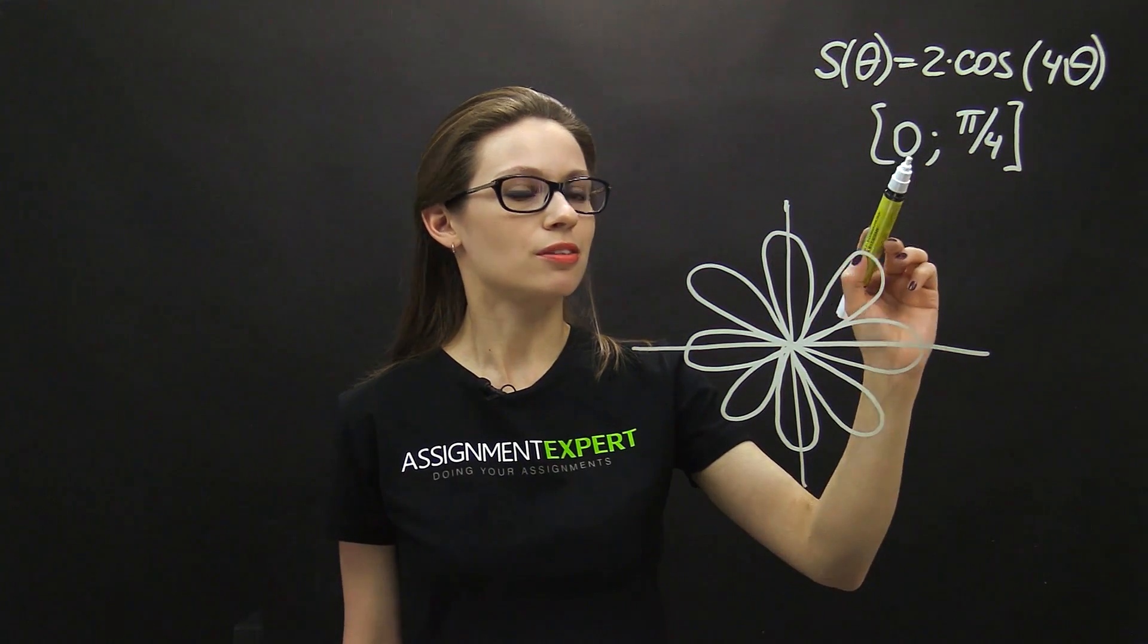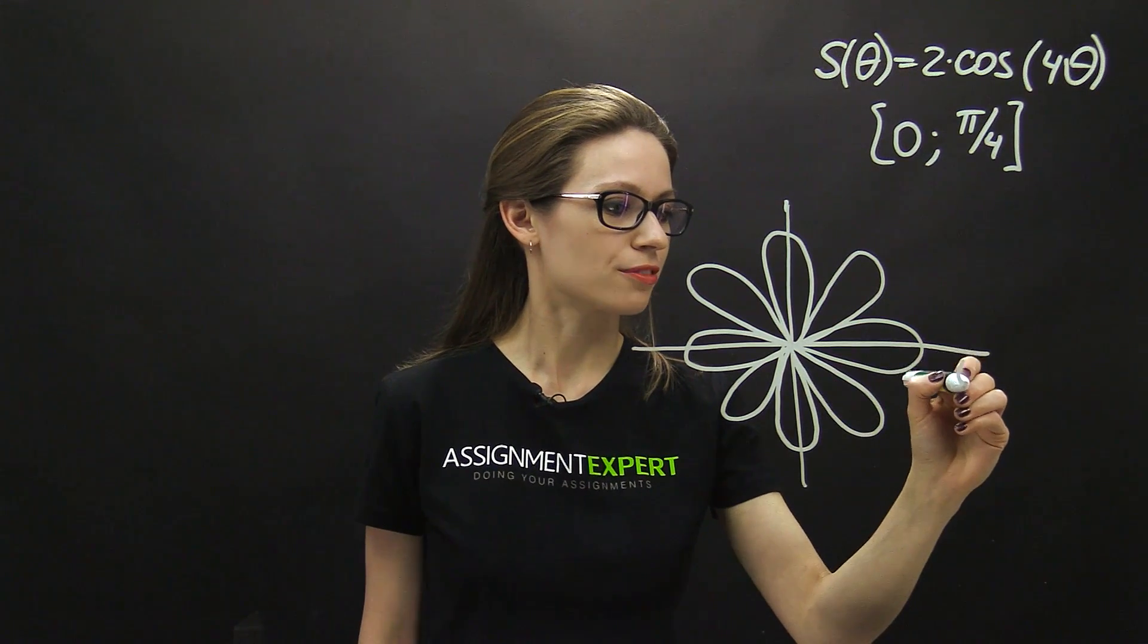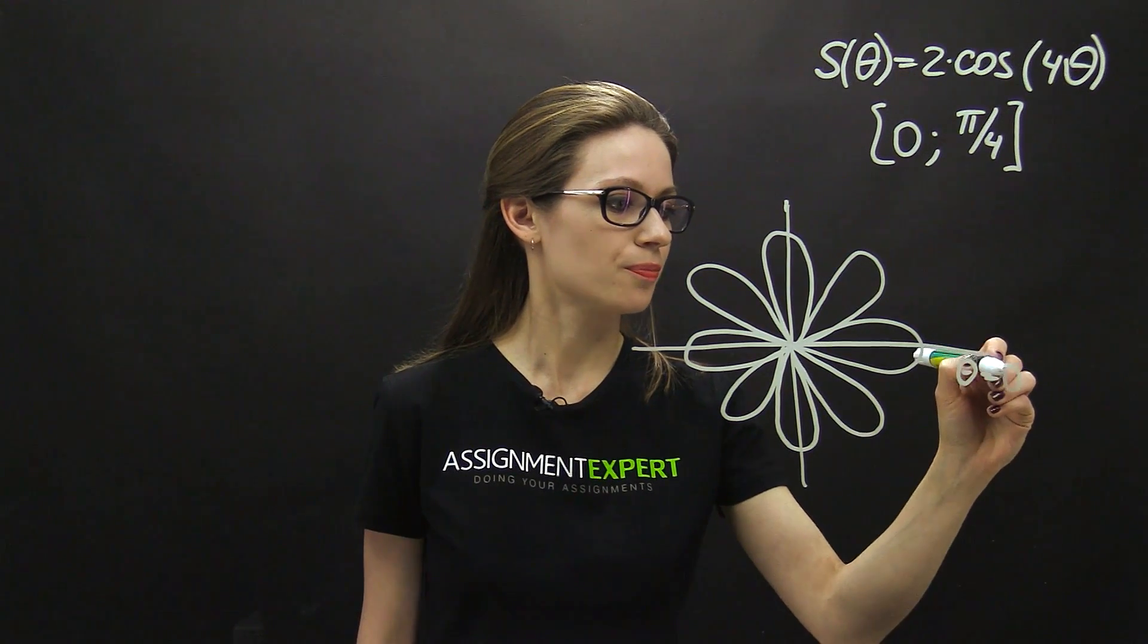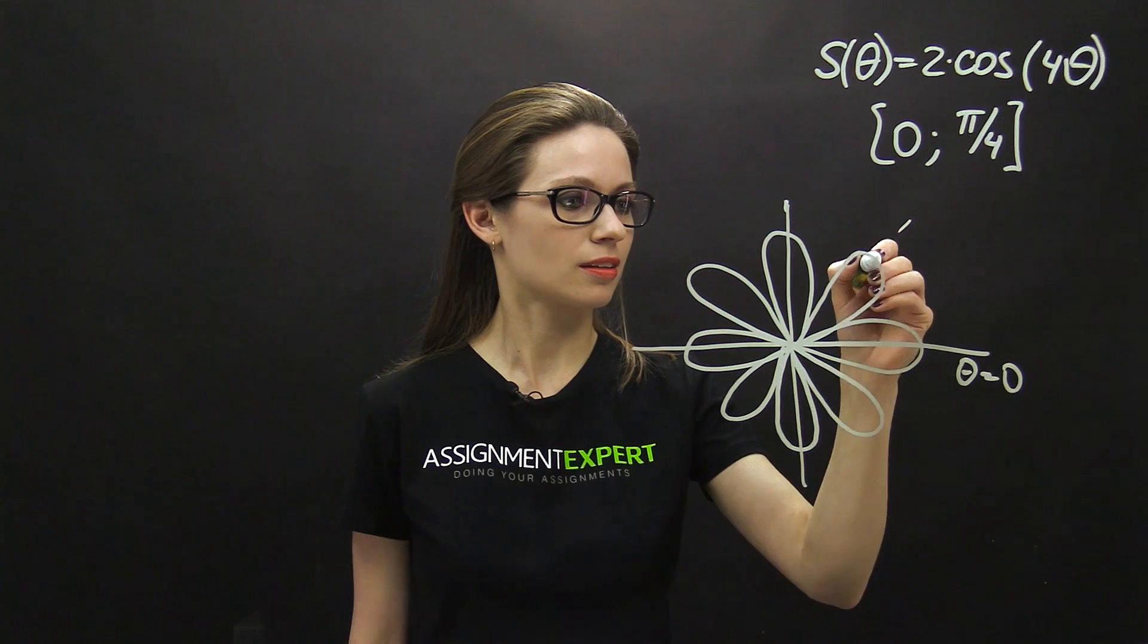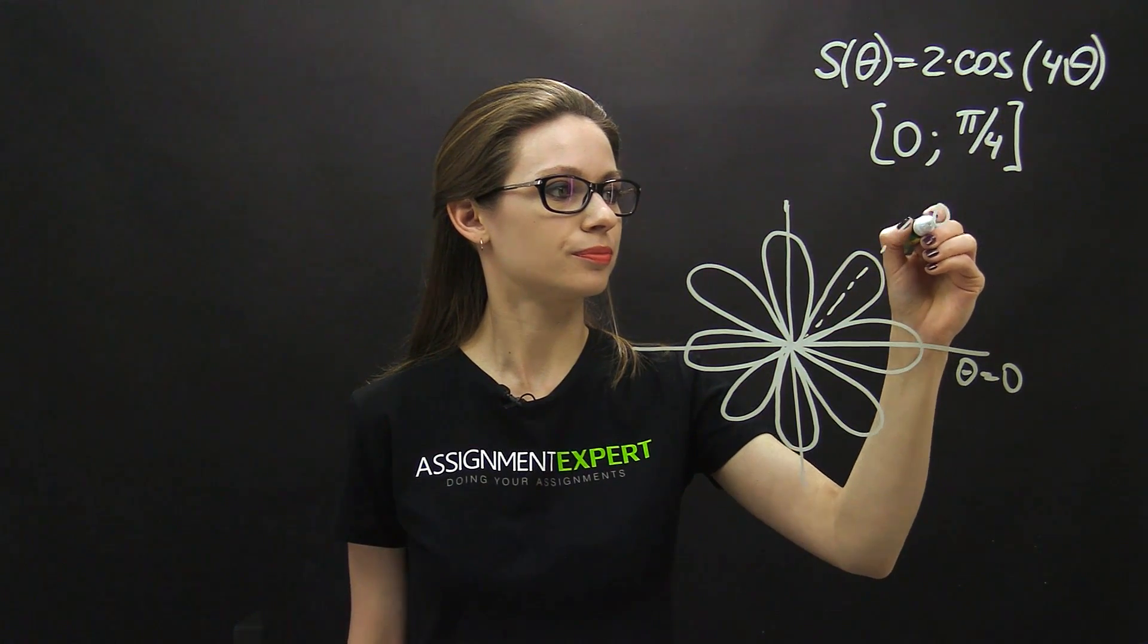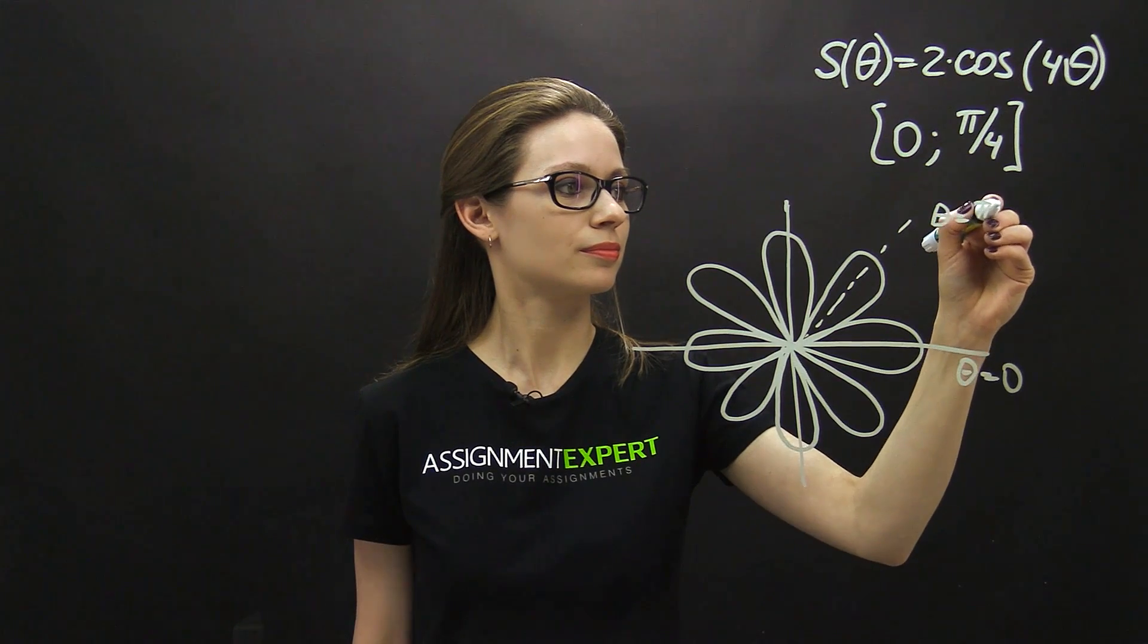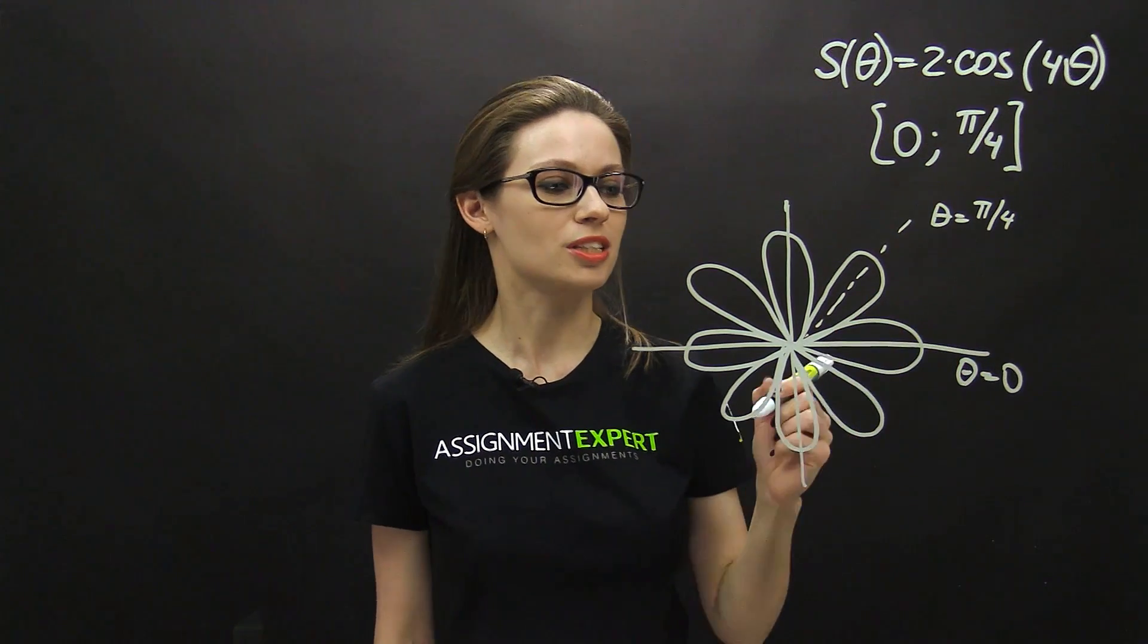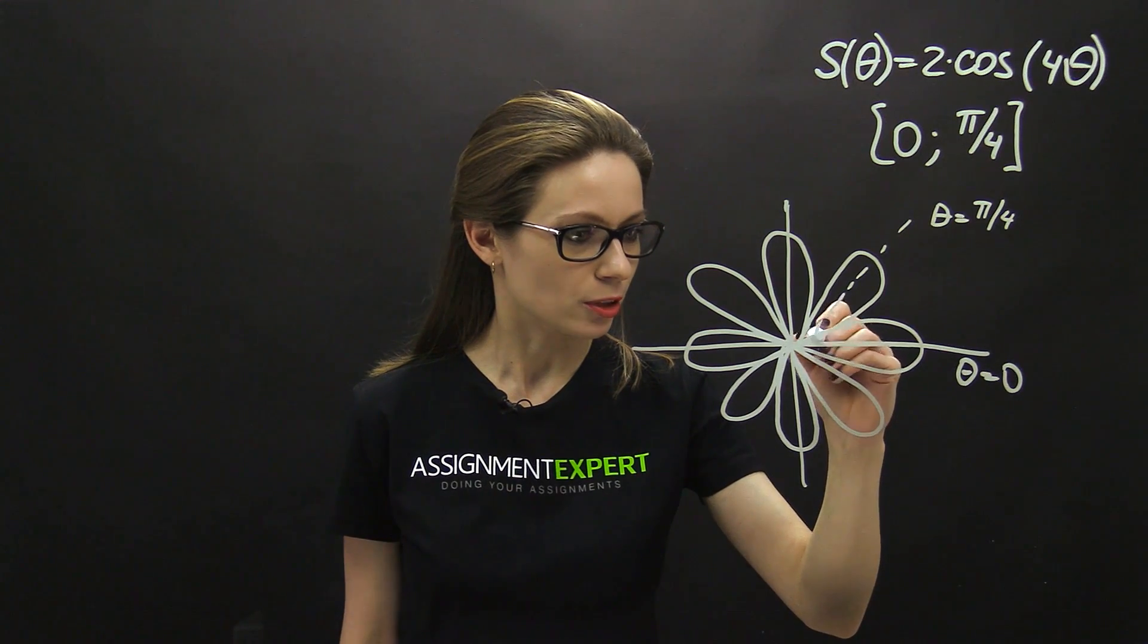Now, we have boundaries 0 and pi over 4. Here we have theta equals 0, and here is pi over 4. Therefore, the area we'll be determining is the following.